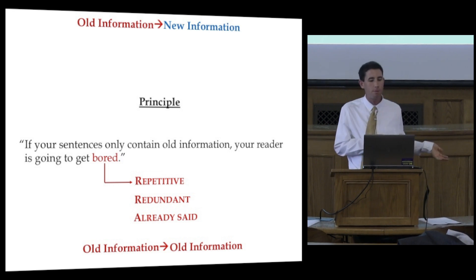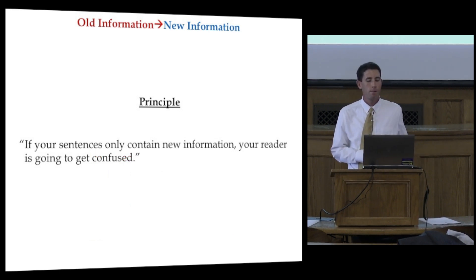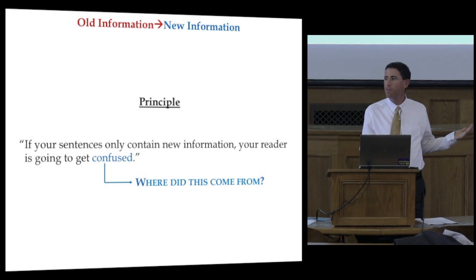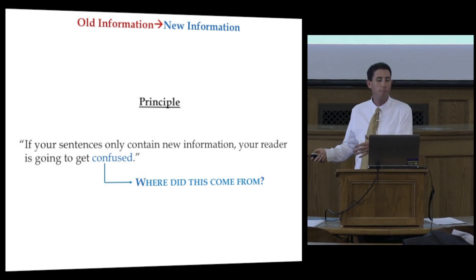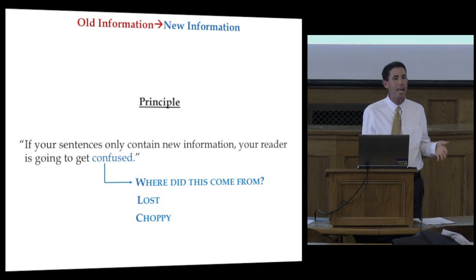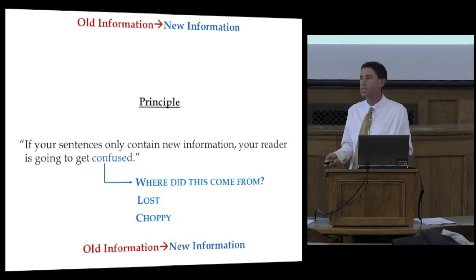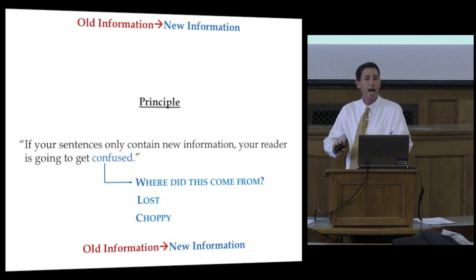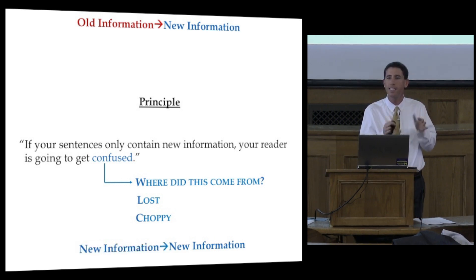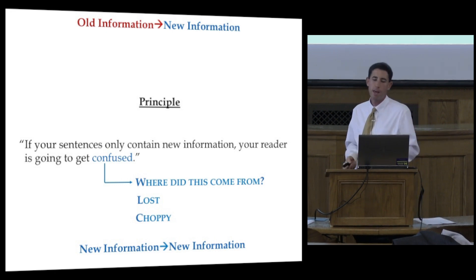Or, Mr. Artunian, the opposite problem could be stated this way. If your sentences only contain new information, your reader's going to get confused. So if you're getting feedback like, where did this sentence come from, where does this paragraph come from, or I'm lost, or this is too choppy, that's again an old information to new information problem — but it's this slightly different kind: new information to new information. You're throwing things the reader doesn't have context for, so it's going to be difficult for them to absorb.